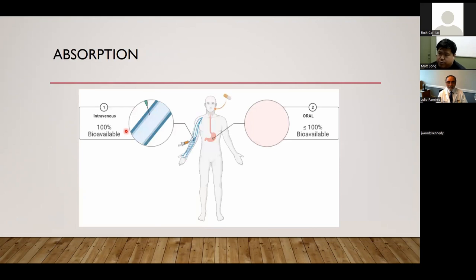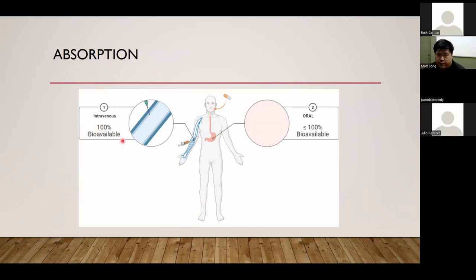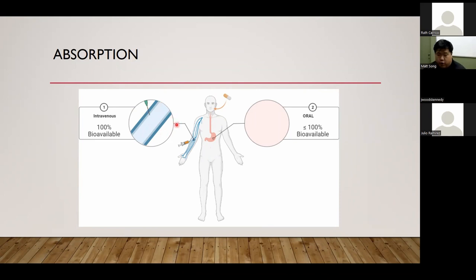Starting with drug absorption — this term is often interchanged with bioavailability. Essentially, absorption or bioavailability is the difference between the amount of drug delivered versus the amount of drug available in the body to be used. To illustrate that, consider two main ways of administering drugs in hospital settings: intravenous and oral. With intravenous administration, all of the drug goes directly into the vasculature and is immediately available — we regard that as 100% bioavailable.